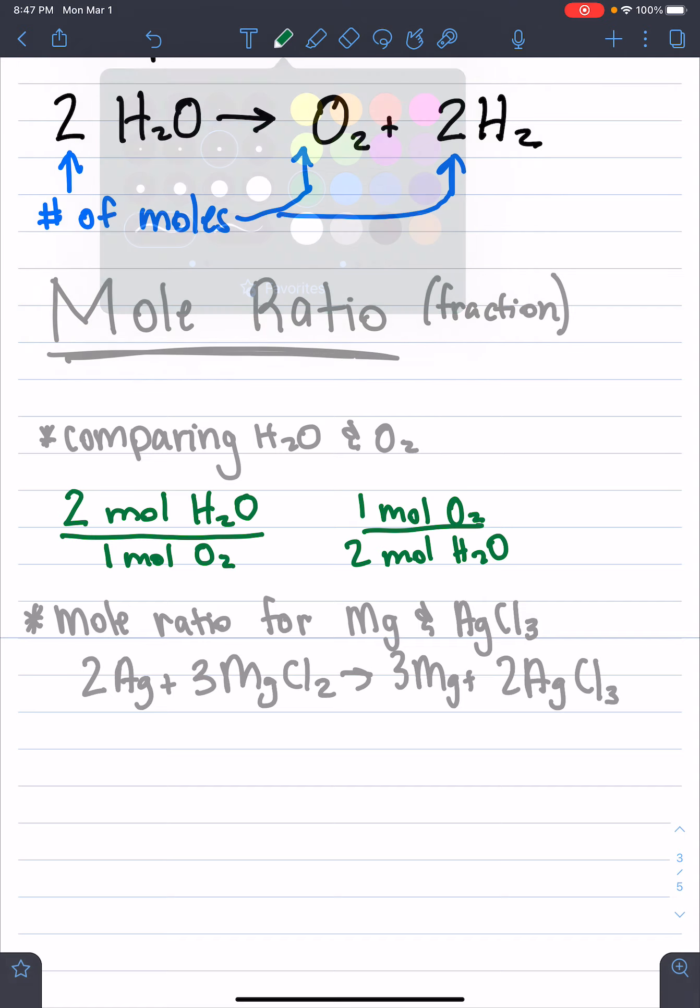So remember, we can write two different ones. So for the first one, let's put Mg on top. So we're going to say, when we have 3 moles of Mg - think in your head, how many moles of AgCl3 will I have? When we have 3 moles of Mg, we're going to always get out 2 moles of AgCl3.